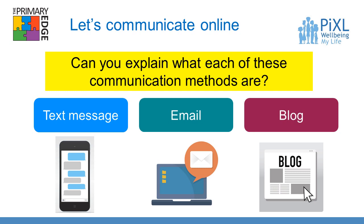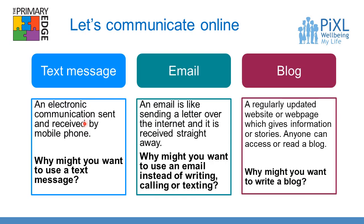Can you explain what each of these communication methods are? You can write it down or talk to someone with you. What's a text message? What's an email? And what's a blog? A text message is an electronic communication sent and received by a mobile phone. An email is like sending a letter over the internet and it is received straight away. And finally a blog is a regularly updated website or web page which gives information or stories — anyone can access or read a blog.